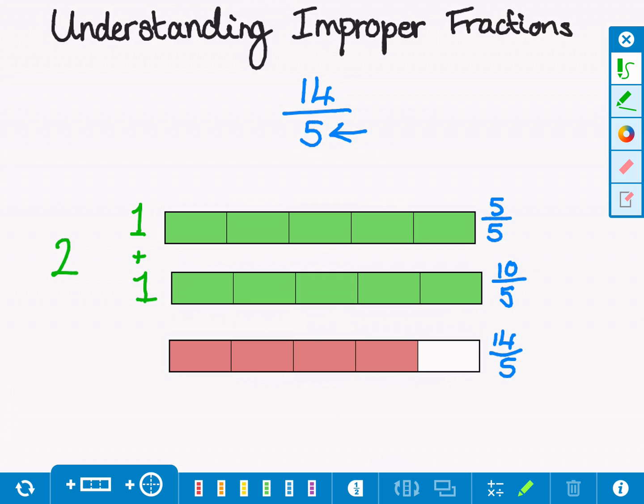So what we've actually got here is 2 whole bars and then what we have remaining down here is 4 fifths. So if we were to want to convert 14 fifths into a mixed number fraction, we would say that 14 fifths is equal to 2 wholes and 4 fifths.